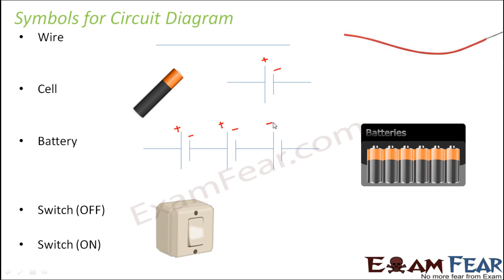One important thing to note is that in a battery, cells are connected so that the negative terminal of one cell is connected to the positive terminal of the next. This is because the electric current generated by each cell should sum up to give a greater total current. In higher classes you will learn about the internal functioning of the battery and why this specific arrangement is used.